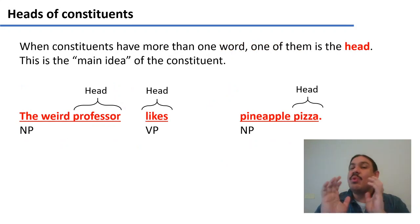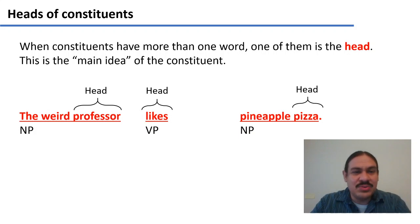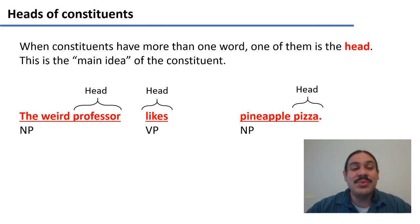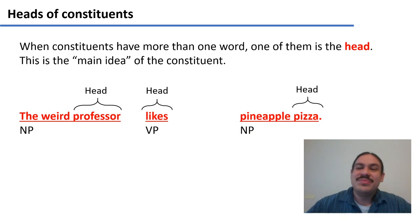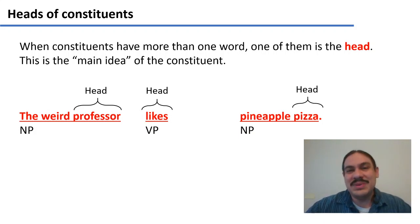What happens if you have more than one word in your constituent? One of them is going to be the head of the constituent — the main idea, what the constituent is talking about. For example, in the sentence 'the weird professor likes pineapple pizza,' you have three constituents: an NP 'the weird professor,' a VP 'likes,' and an NP 'pineapple pizza.'